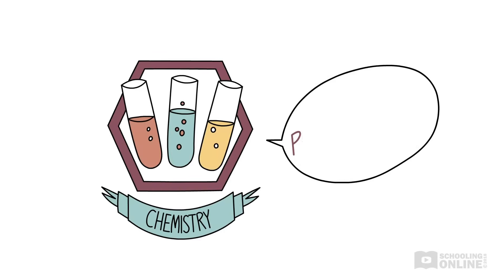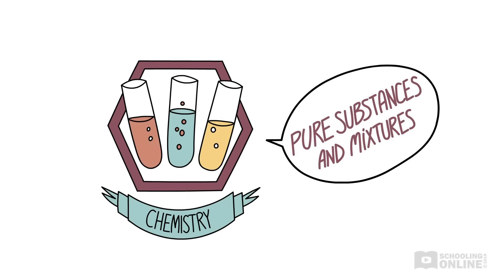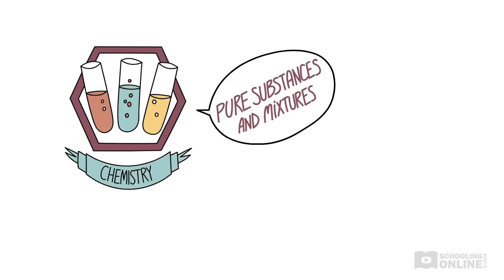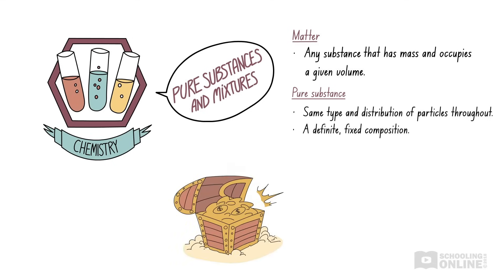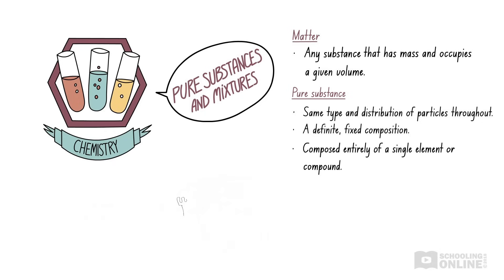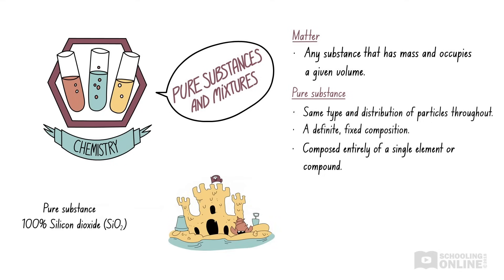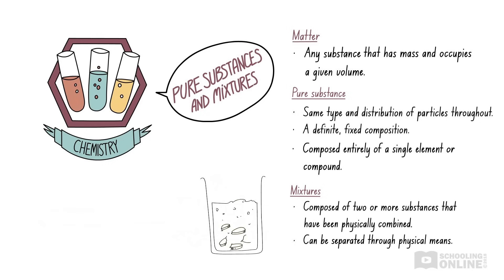Let's revise what we have learned about pure substances and mixtures. In the HSC chemistry course, you will often be asked to classify different types of matter. The key points of this video are the definitions, which should be memorised. Matter is any substance that has mass and occupies a given volume. Pure substances consist of matter that has the same type and distribution of particles throughout and a definite, fixed composition. Pure substances are composed entirely of a single element or a compound in which two or more elements have been chemically combined. Finally, mixtures are composed of two or more substances that have been physically combined and can be separated through physical means.